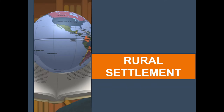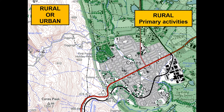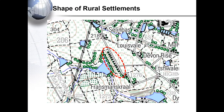Moving on to settlements — rural settlement. Here we can ask whether the area is rural or urban. You have to read your map and look at the amount of agricultural area and rural primary activities, secondary activities and tertiary activities. We can also ask you the shape of rural settlements. In this case, the settlement circled in red is situated along a road — therefore, linear.